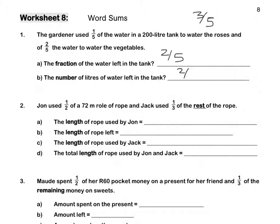2 fifths of 200 litres: 200 divided by 5 is 40, and 40 times 2 gives us an answer of 80 litres left.